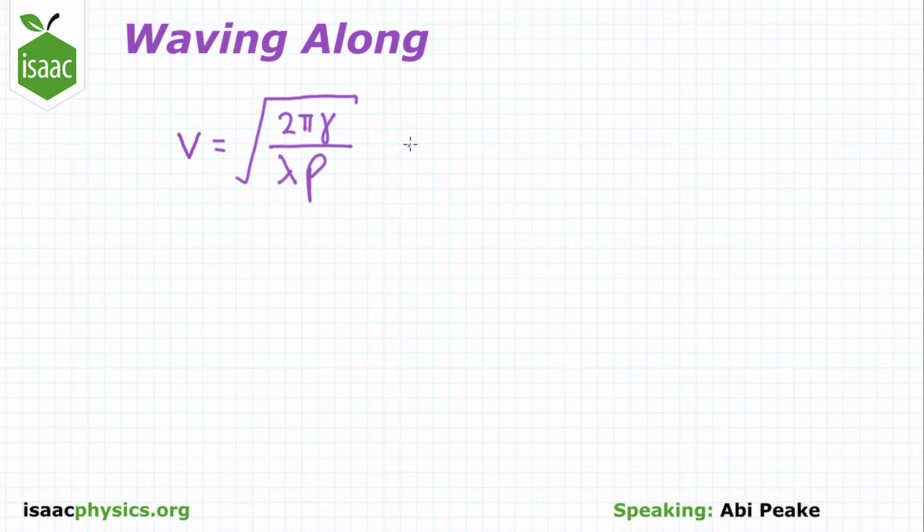This means that λ, the wavelength, is the only variable on the right-hand side of the equation. In other words, if we want the wave speed to change, the only thing we can change is the wavelength.